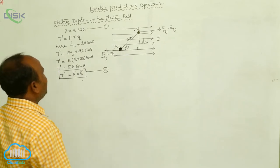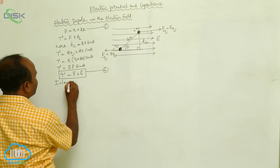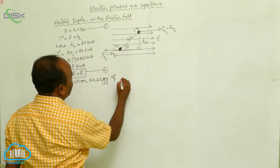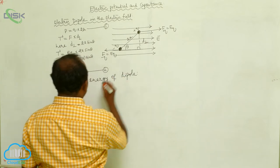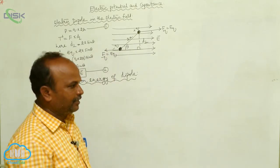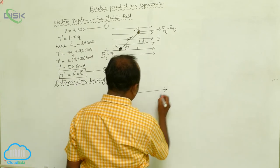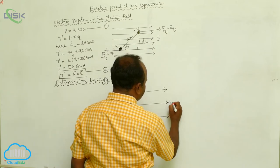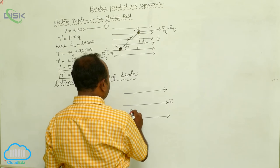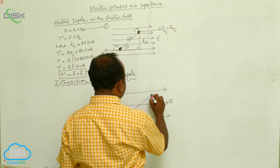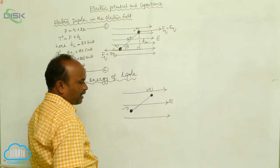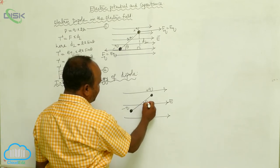Next, we consider the interaction energy of the dipole. Whenever the dipole is placed in the uniform electric field, with the negative charge on one side and the positive charge on the other, the dipole makes an angle theta with the electric field.